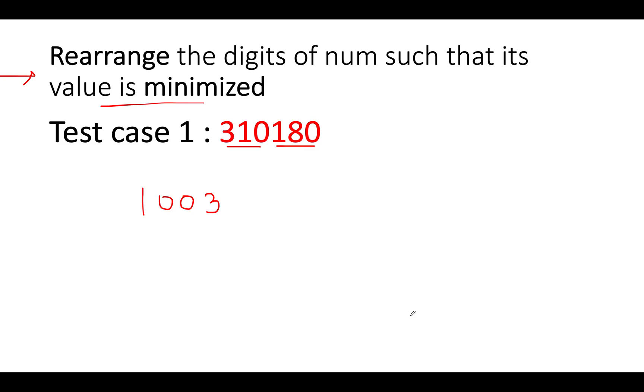So let's take an example here. The input number that is given to us is 310180. So what is the smallest number that can be generated using these digits? It would be equal to 100138. So how many digits do we have? 1, 2, 3, 4, 5, 6. 1, 2, 3, 4, 5, 6. Perfect. So this is the smallest possible number that can be generated.